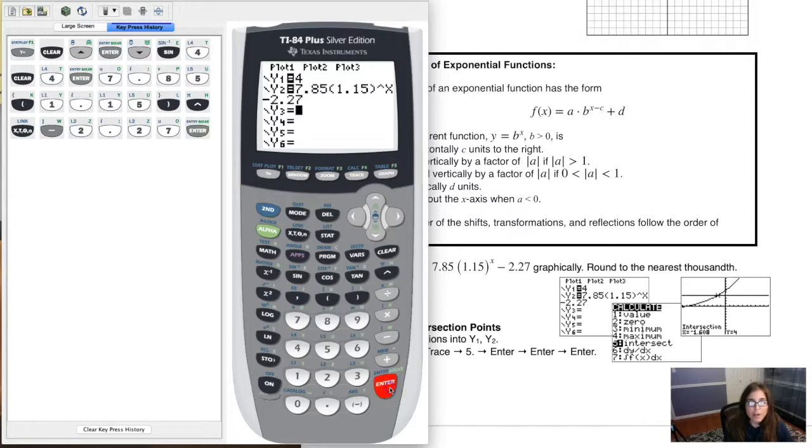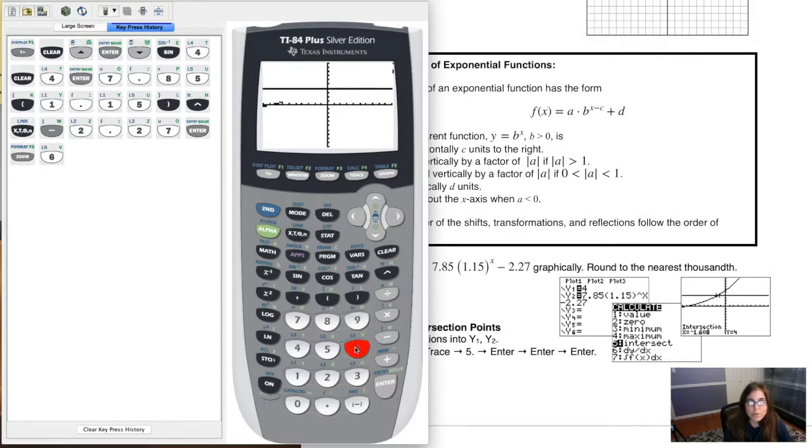Alright, we got those in there. So let me hit zoom 6. I don't know what my window was previously. And if I look at that graph, or the graph of those two functions, I do see them intersecting right around here.